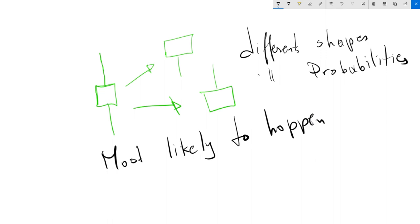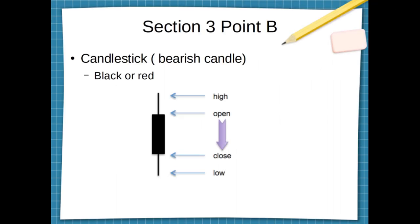We're going to go over some very specific candles. Based on my experience, it's more important to identify the shape instead of knowing their name. The first type of candle we're going to talk about — this shape represents indecision in the market.